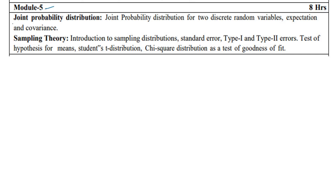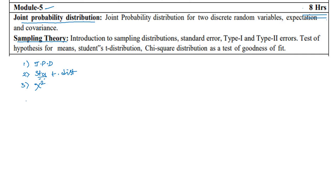Moving on to Module 5, which is the last topic and a very easy one. I prefer you to solve this module as your first question in the answer script. Here you have two topics — joint probability distribution and sampling theory. I have already explained the topic and released a video on sampling theory, which you can refer to. The joint probability distribution problem will be a compulsory question. For the second question, you can consider student-t distribution.